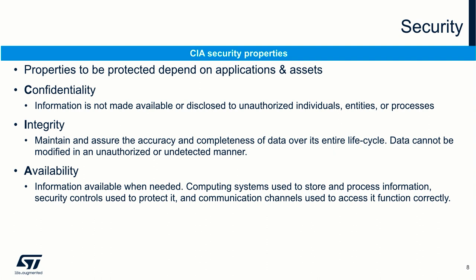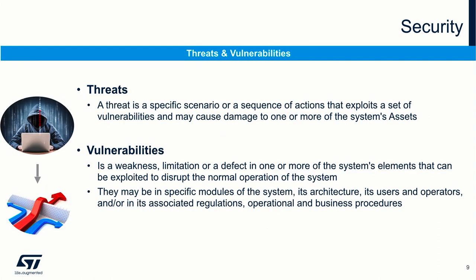When we talk about information security, there are three major properties to be considered: confidentiality, integrity, and availability. Confidentiality means that information should not be made available or disclosed to unauthorized individuals, entities, or processes. Integrity is to maintain and assure the accuracy and completeness of data over its entire life cycle — data should not be modified in an unauthorized or undetected manner. Availability means that information should be available when needed. We need to protect assets not only because they have values, but also because there are threats to those assets and vulnerabilities in the system. A threat is a specific scenario or sequence of actions that exploits a set of vulnerabilities and may cause damage to one or more of the system's assets. A vulnerability is a weakness, limitation, or defect in one or more of the system's elements that could be exploited by threats to disrupt the normal operation of the system.